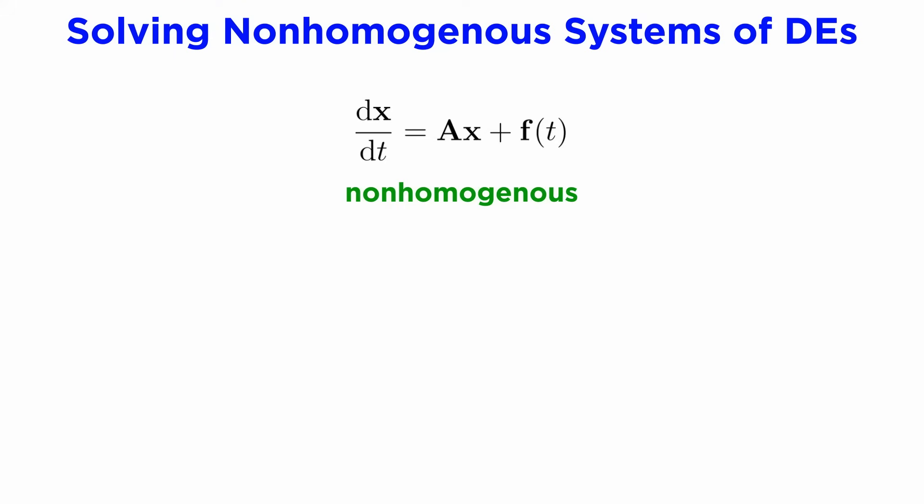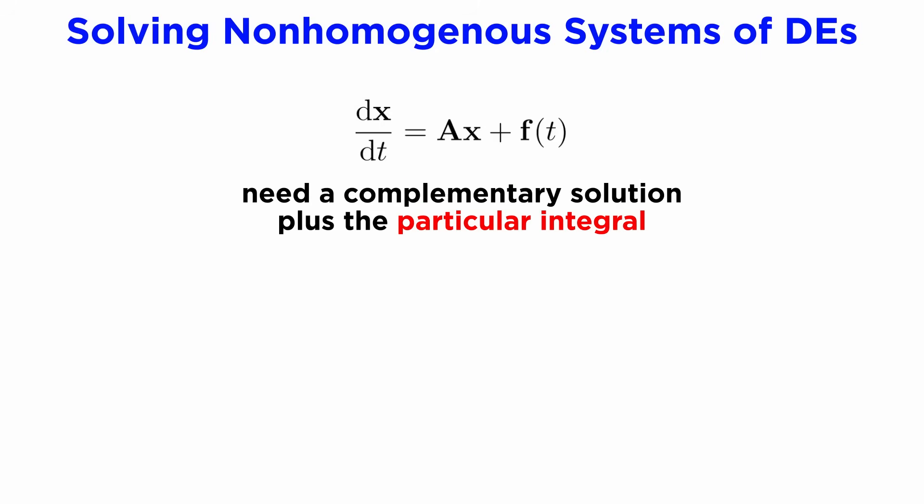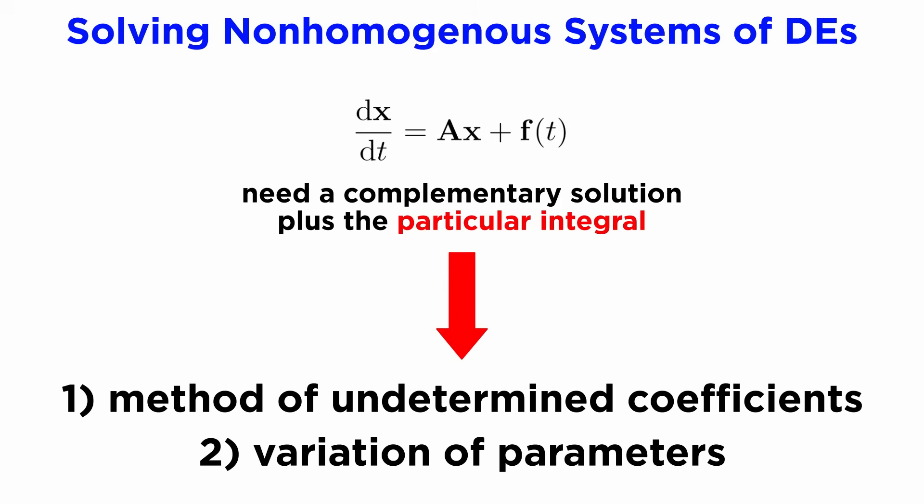Now let's see how to solve the non-homogenous case, which will occur if either variable has an explicit dependence on the independent variable t. We can write this in the form x prime equals A times x plus f of t, where f is a vector valued function. The method that we've just gone through will give us the complementary solution, and we need to add on a particular integral of which we can use the two methods that we learned about, the method of undetermined coefficients and variation of parameters.